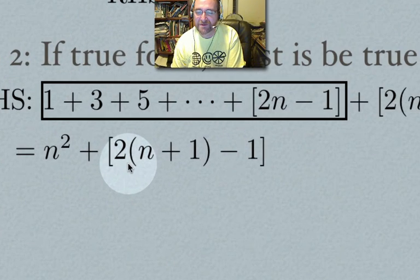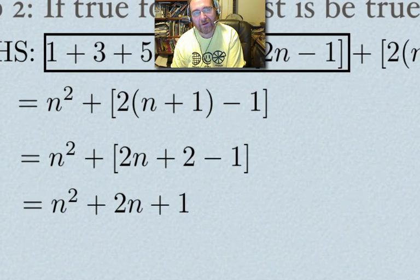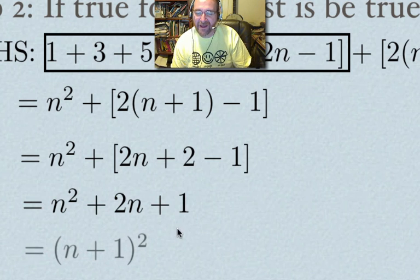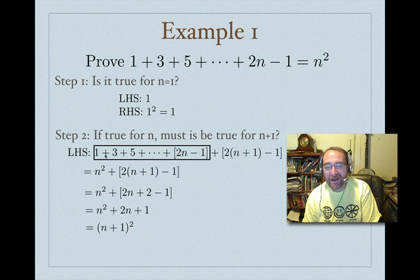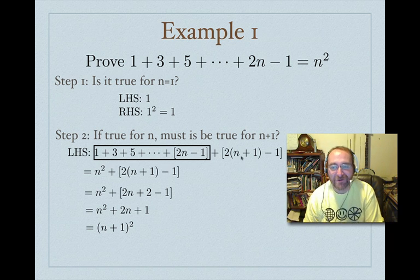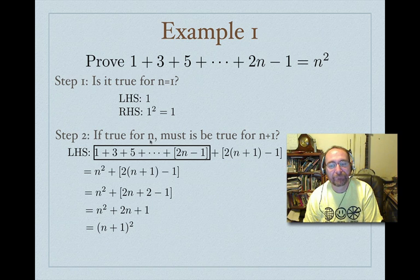Now I can distribute and combine like terms, then factor. And there it is: n plus 1 squared. Adding up n odd numbers and then adding the next one gives n plus 1 squared — but that's only true because we substituted the formula assuming it was true for n.